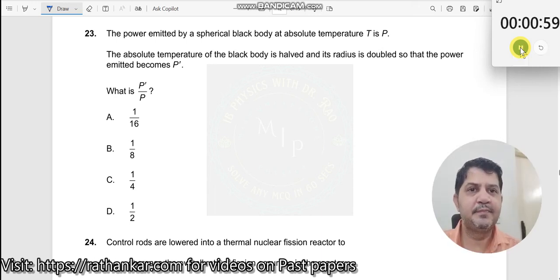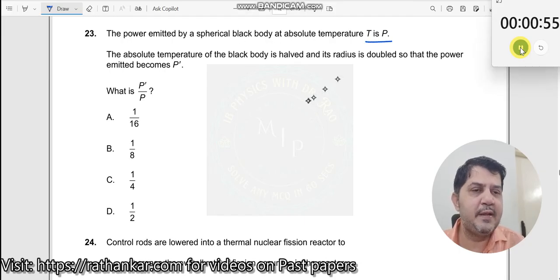Question number 23. The power emitted by a spherical black body at absolute temperature T is P. Which problem is this? Wien's displacement law or Stefan's law? Any one of them.